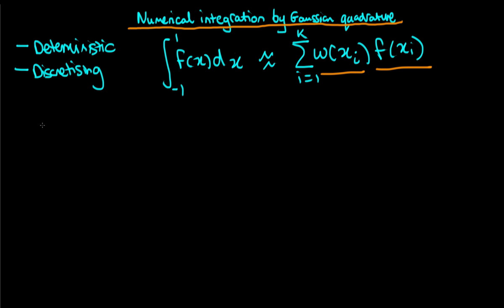The idea with Gaussian quadrature is we replace our function with an approximation, f-hat. We start off with the most simple kind of approximation — just a constant — and then include a linear term in x. It turns out that for all linear polynomials we can find the exact x values and the weights at those x values which ensure that this approximation is actually exact for all linear models.